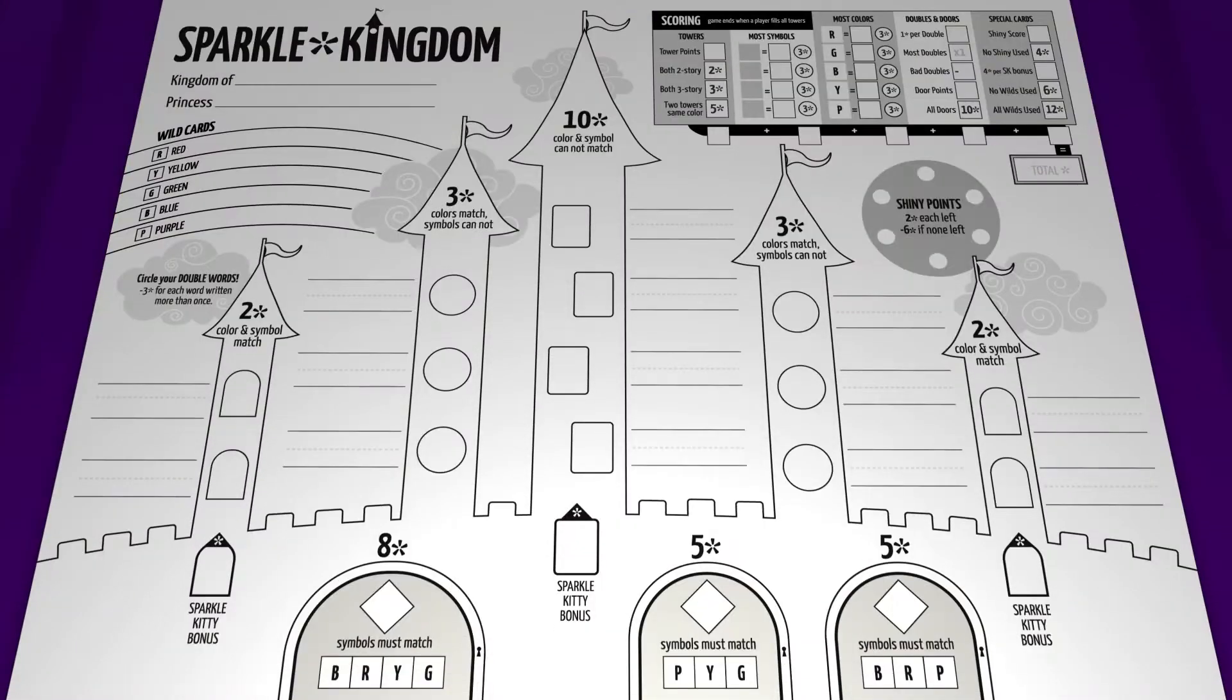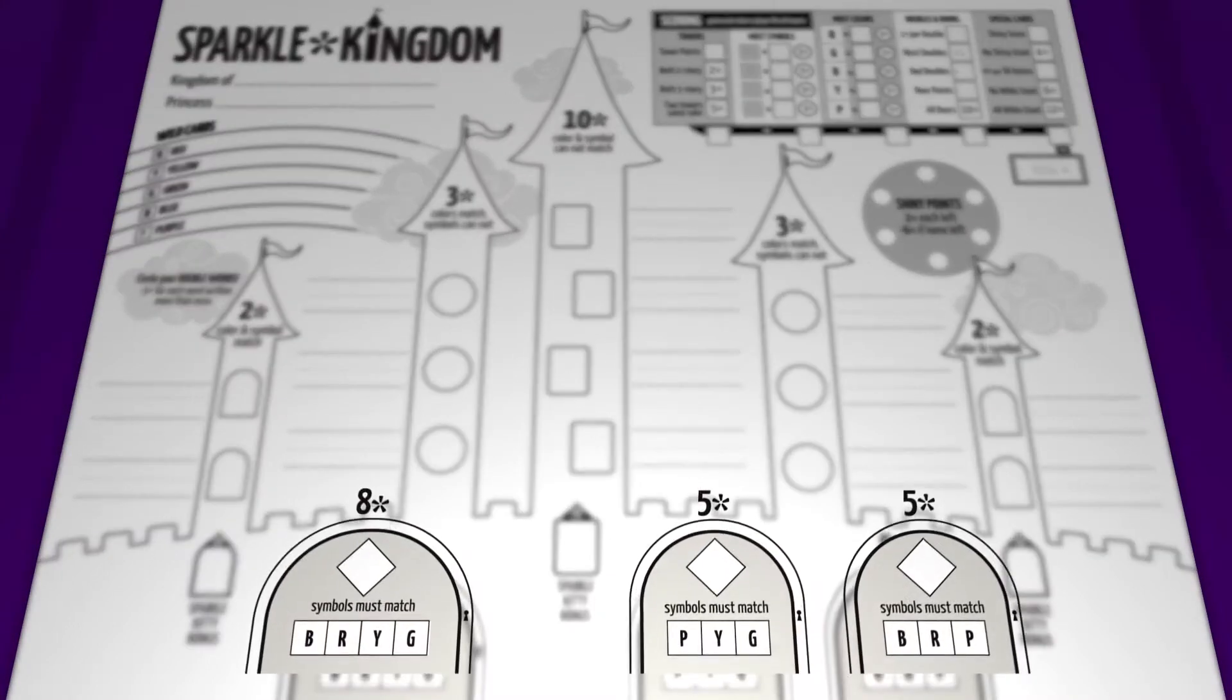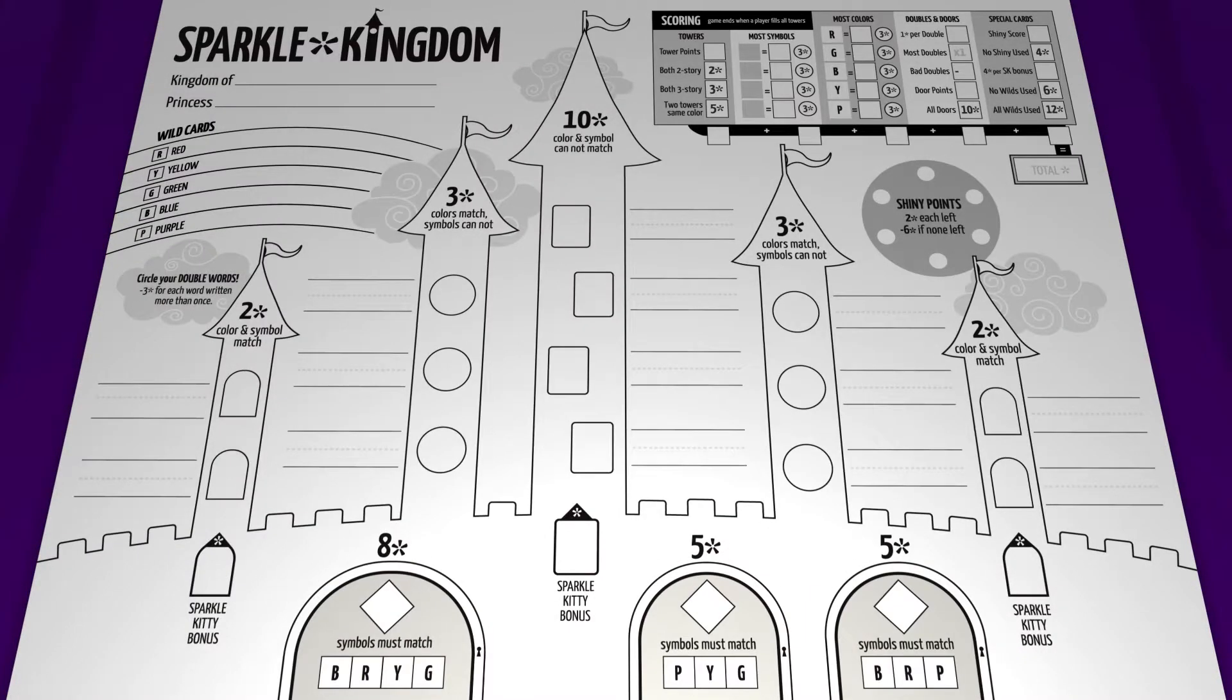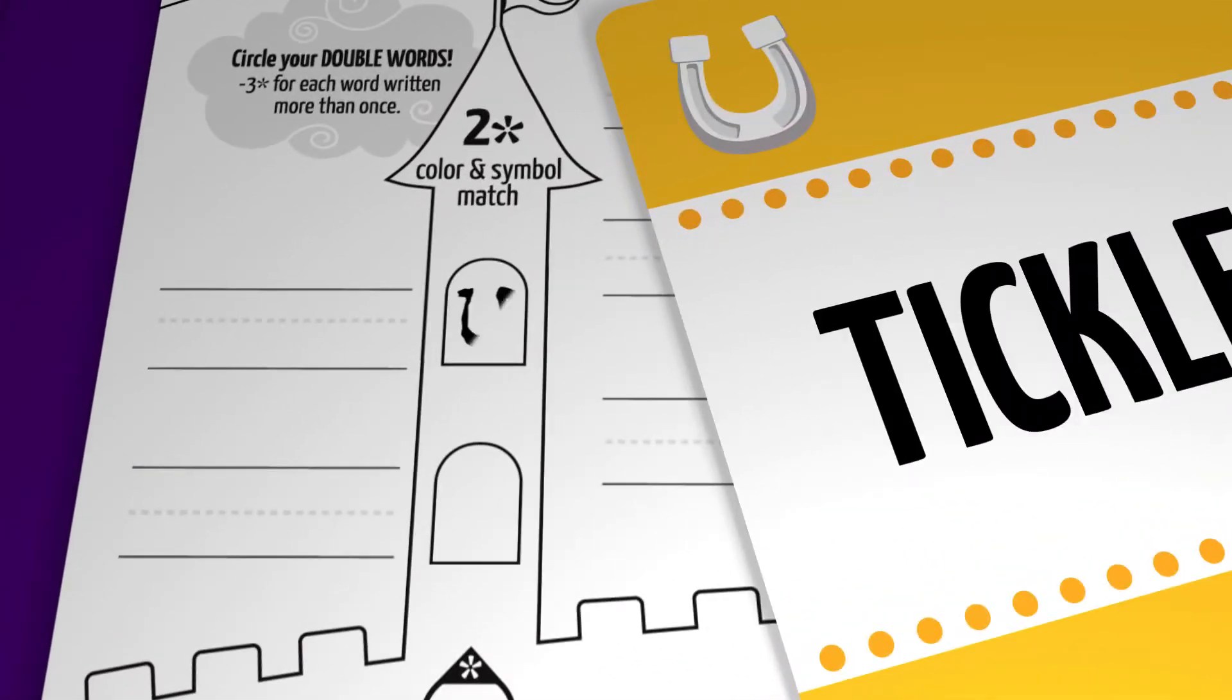Chosen cards will be added to towers or doors to score points. If you choose to add the spell to a tower you simply draw the symbol into an empty window, color the tower section with the color and write the word in the space adjacent.